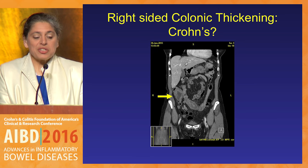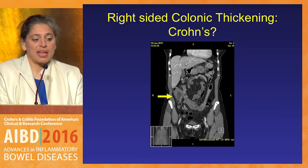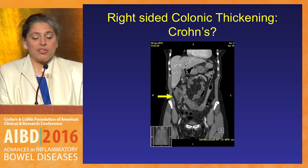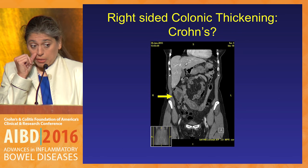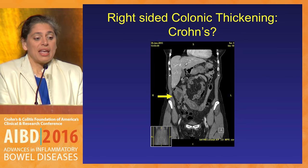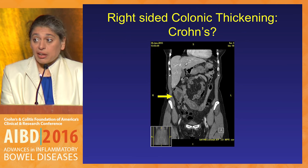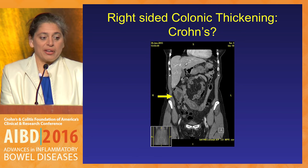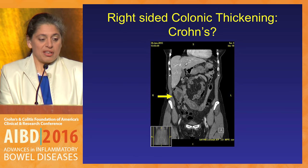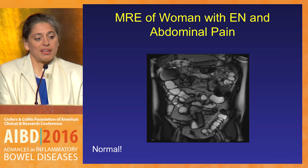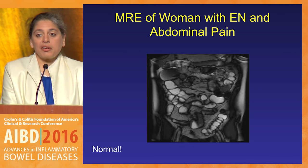This was a patient who came to our ER — a young woman complaining of right-sided abdominal pain. She automatically got a CT scan, and there was right-sided colonic thickening shown by the yellow arrow. She was diagnosed in the ER with Crohn's disease, given prednisone, and didn't get better. It turns out this was actually an endometrioma.